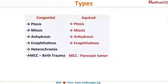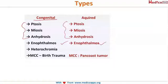There are two types of Horner's syndrome: congenital and acquired. The three components — ptosis, miosis, and anhydrosis — along with anophthalmos, are present in both. The striking difference in congenital Horner's syndrome is iris heterochromia: one eye has a different color than the other.